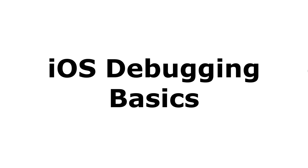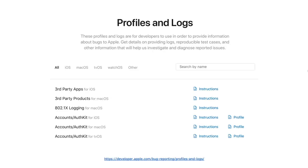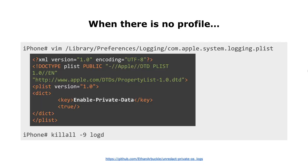Before we instrument anything, we need to talk about debugging and understanding existing implementations. Apple offers special profiles even for non-jailbroken devices. After installing a profile, you will get additional logging information and sometimes even additional tool support like the Bluetooth packet logger. Sooner or later you will be in the situation that there is no profile for what you want to debug. However, most profiles only override logging settings, which you can do on your own on a jailbroken device.